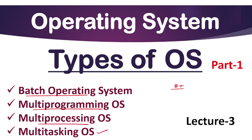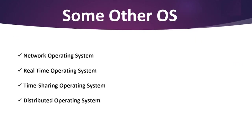We will discuss every type in detail with some real-life examples so that it will be easily understandable to all of you. Other than these 4, we have some more types that we will discuss in the next video — that is network operating system, real-time, time-sharing and distributed operating system.